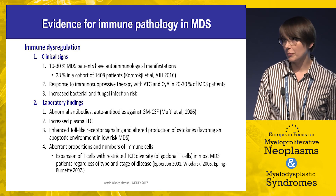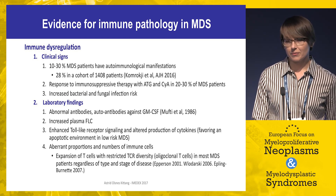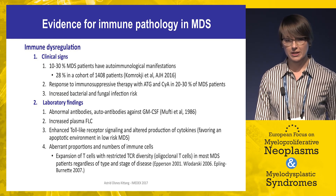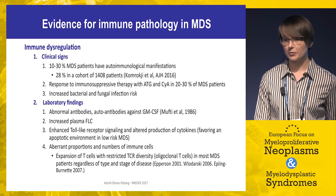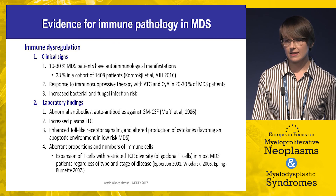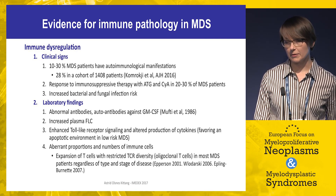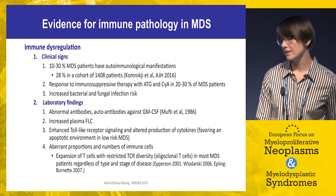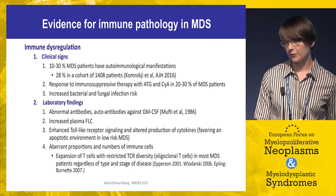The most common autoimmune manifestation was hypothyroidism, though other diseases like lupus, vasculitis, and hemolytic anemia can also occur. Additionally, the fact that immunosuppressive therapy is effective in 20 to 30 percent of MDS patients points towards immune pathogenesis. The response rate is even higher when selecting younger patients with more hypoplastic bone marrow, HLA-DR15 positive status, and favorable risk cytogenetics.